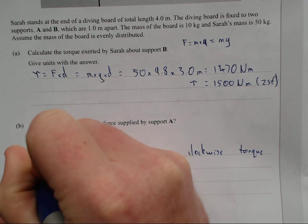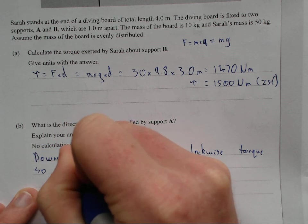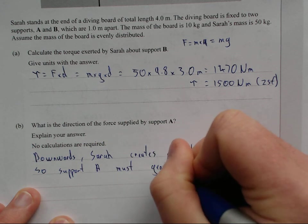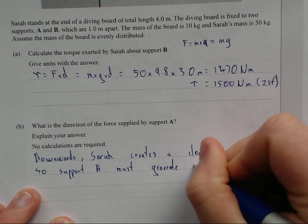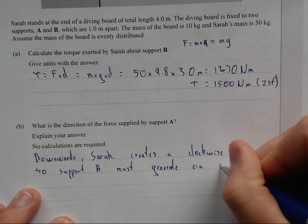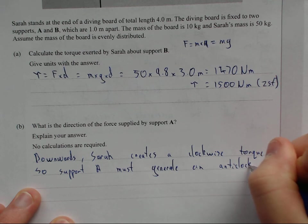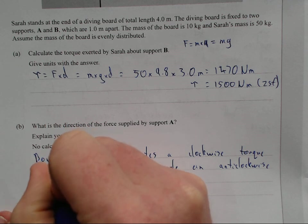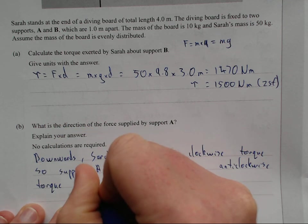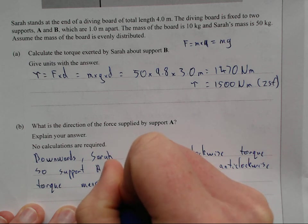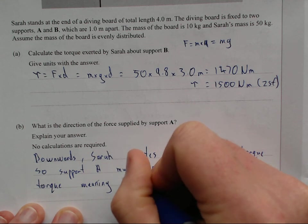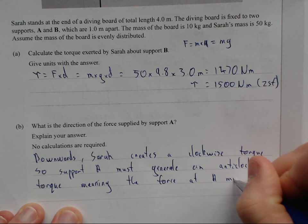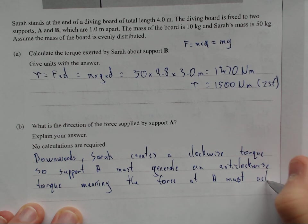So, support A must generate an anti-clockwise torque. Or an anti-clockwise, anti-clockwise torque, meaning, always meaning, the force at A must act downwards, must act downwards.